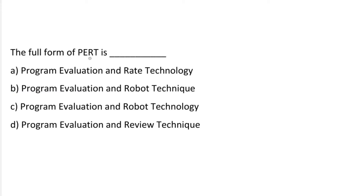Next question: the full form of PERT is — Option A: Program Evaluation and Rate Technology. Option B: Program Evaluation and Robot Technique. Option C: Program Evaluation and Robot Technology. Option D: Program Evaluation and Review Techniques. The correct answer is option D, Program Evaluation and Review Techniques.